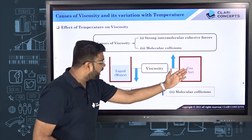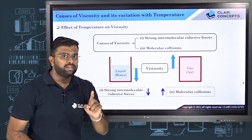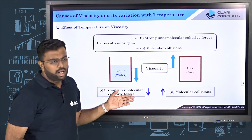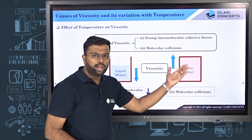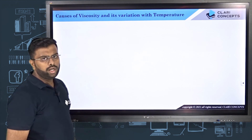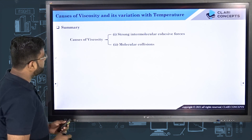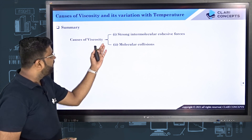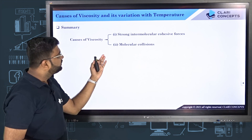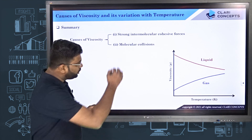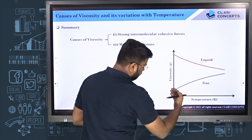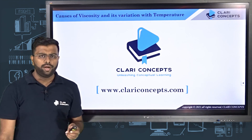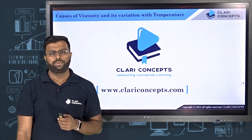So you need to understand that for all liquids, when you increase the temperature, viscosity will come down. On the other hand, for gaseous substances, when you increase the temperature, viscosity will rise. To summarize: there are two major causes of viscosity in fluids — one is strong intermolecular cohesive forces, and the second is molecular collisions. When temperature increases, viscosity of liquid comes down, while viscosity of gas rises. Thank you so much. We will see you in the next class where we will learn another topic conceptually.